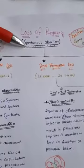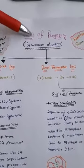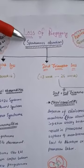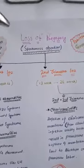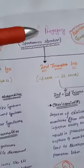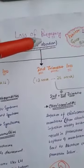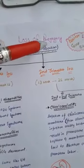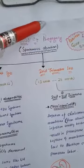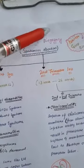Today we will talk about loss of pregnancy, or what you can call spontaneous abortion. Pregnancy is the entire duration of time from fertilization up to delivery — that whole period is called pregnancy.